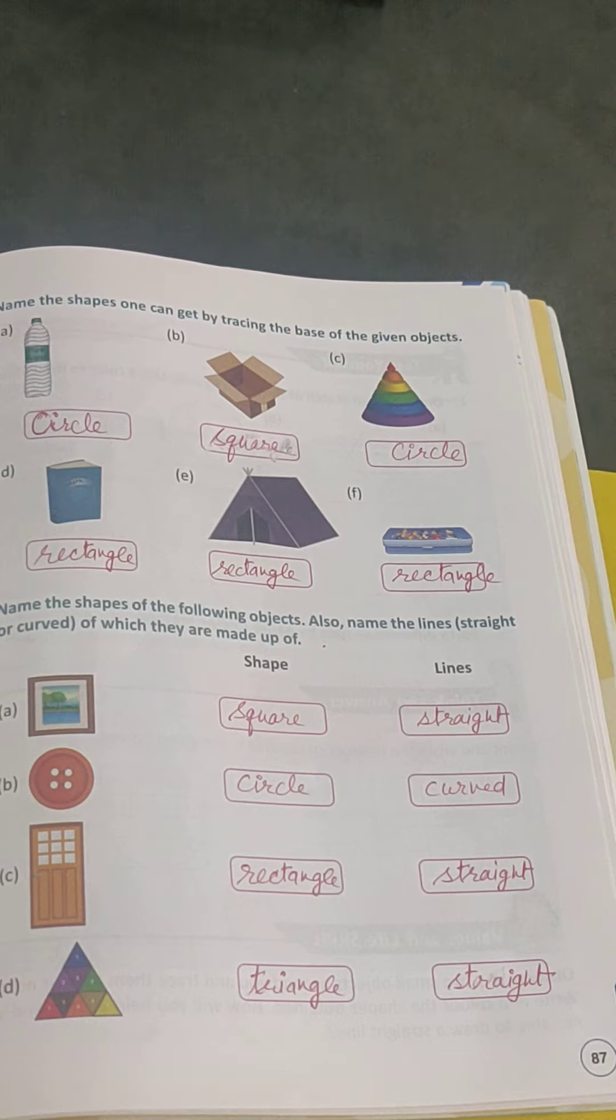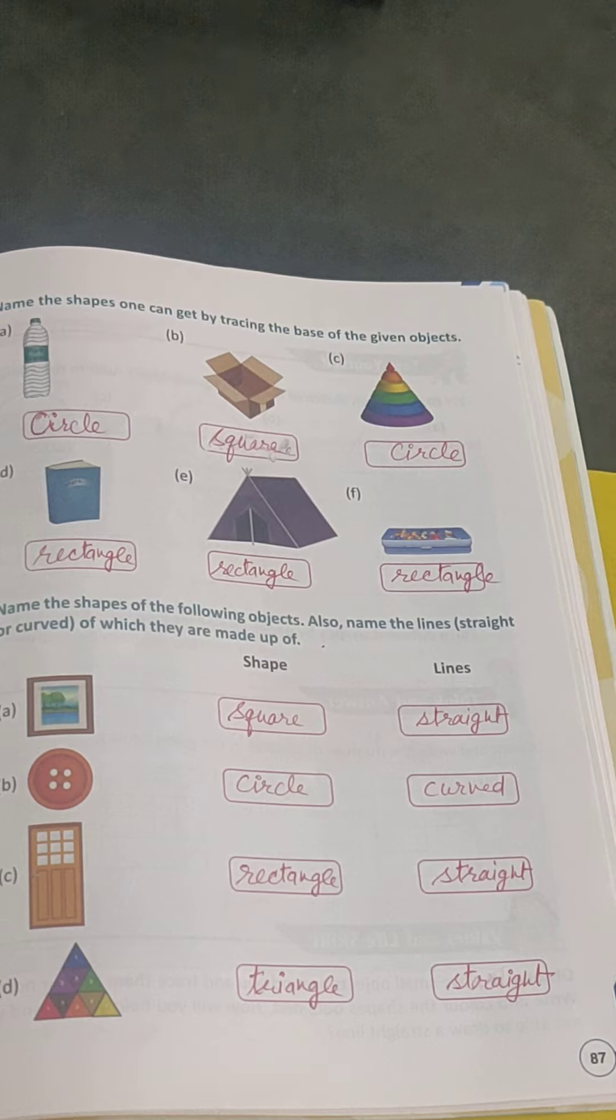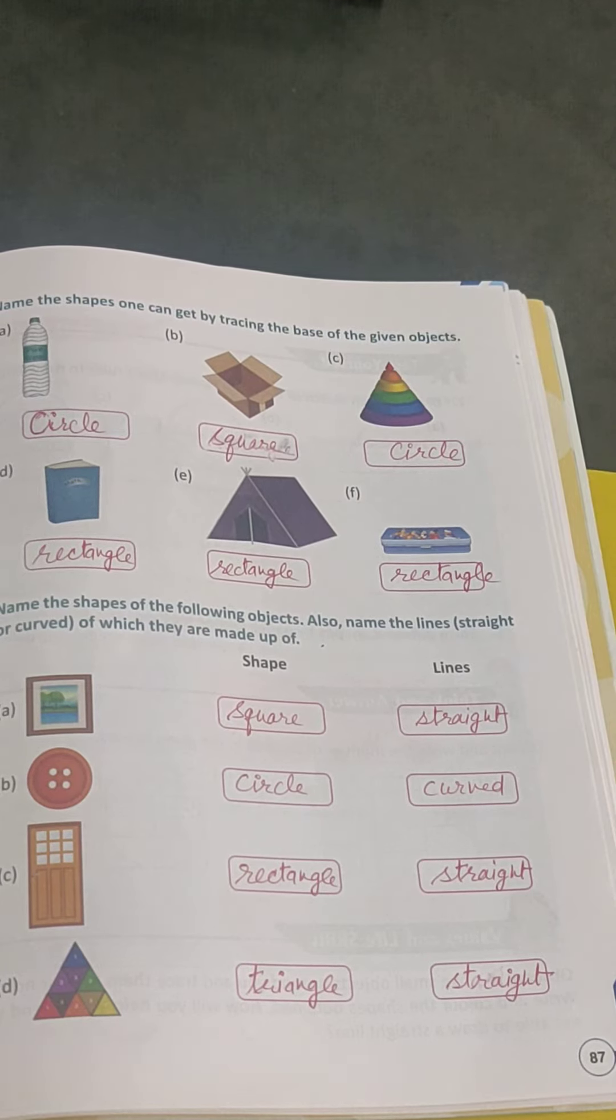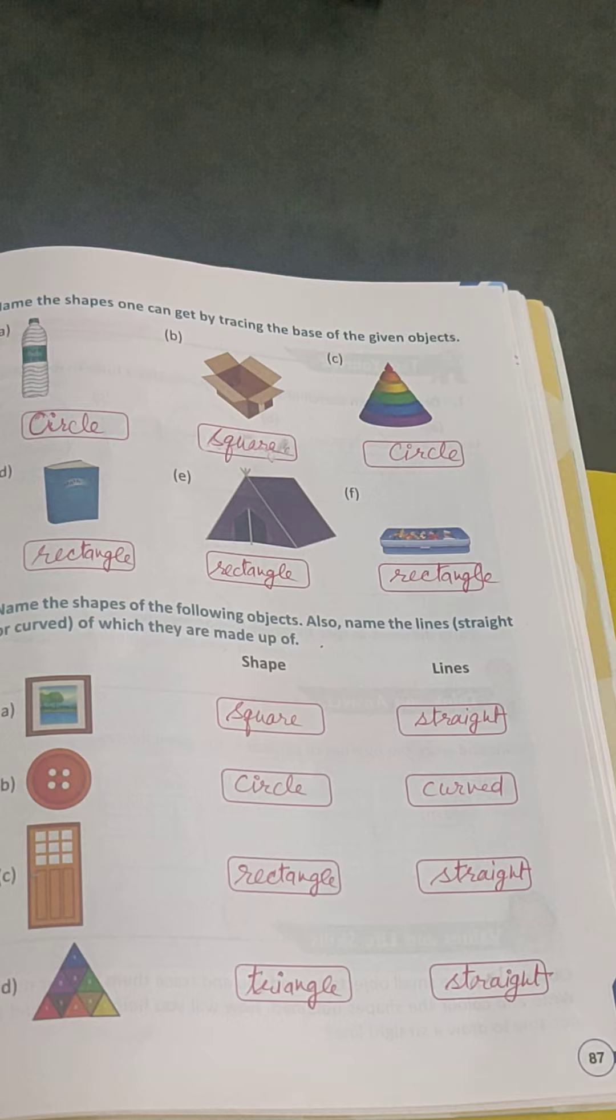Object A is a bottle. Circle. Object B is a box. Square.